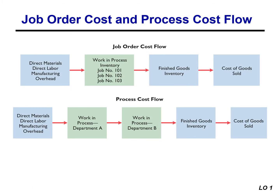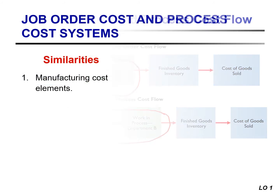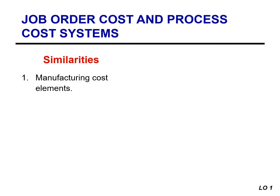The flow of cost in these two systems is basically the same, with one slight difference. In a job order cost system, companies accumulate costs by each job, whereas a process cost system tracks costs by each department or manufacturing process, and a separate work in process inventory account is maintained for each department or process.